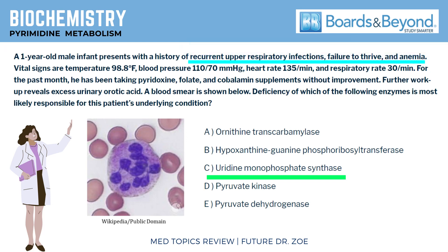Most of us, when we see megaloblastic anemia, we automatically think about vitamin deficiencies, probably vitamin B12 and B9. But here in the case, we already saw that the patient did take vitamin supplements; however, there was no improvement. So that is not the case. Here we already see the trigger keyword: excess urinary orotic acid. So that already leads you to think that there's something wrong with the metabolic pathway.